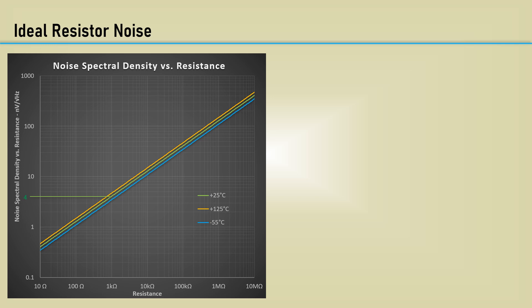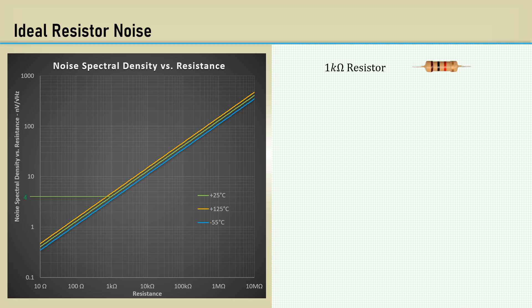Let's calculate the noise of an ideal 1K resistor. We get about 4 nanovolts per square root hertz.